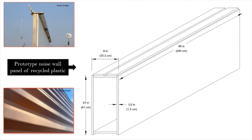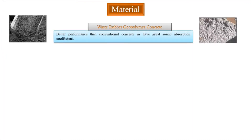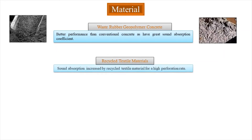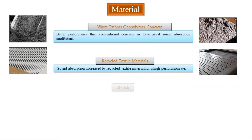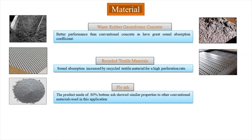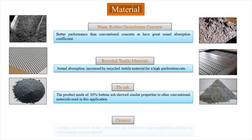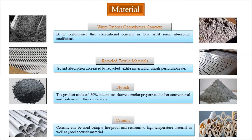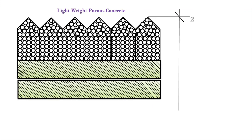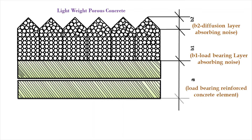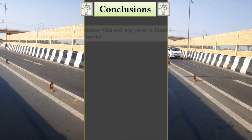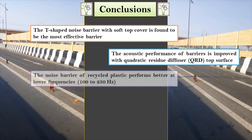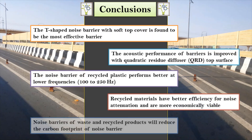Noise barriers utilizing recycled plastic perform better at lower frequencies of 100 to 250 Hz. Waste rubber geopolymer concrete shows better performance than conventional concrete due to a greater sound absorption coefficient. Sound absorption is increased by recycled textile material at high perforation rates. Products made of 80% water mesh showed similar properties to conventional materials. Ceramic can be used as a fireproof, high-temperature-resistant, and good acoustic material. Lightweight porous concrete has sufficient noise absorption and offers economical savings as a recyclable product. Recycled materials have better efficiency for noise attenuation and are more economically viable, and noise barriers from waste and recycled products will reduce the carbon footprint.